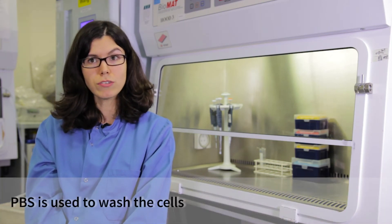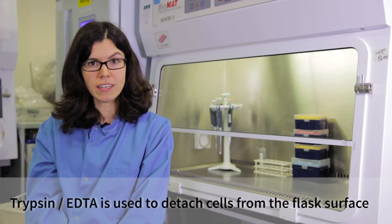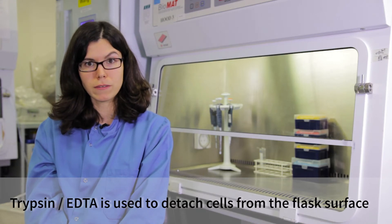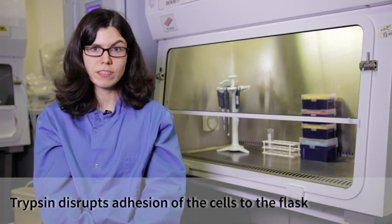The PBS, phosphate buffer saline solution, is used to wash the cells. Finally, we use trypsin EDTA to detach the cells from the plastic surface. Trypsin is a protease enzyme that digests proteins after the amino acid lysine or arginine. It breaks adhesions to the plastic surface of the flask.